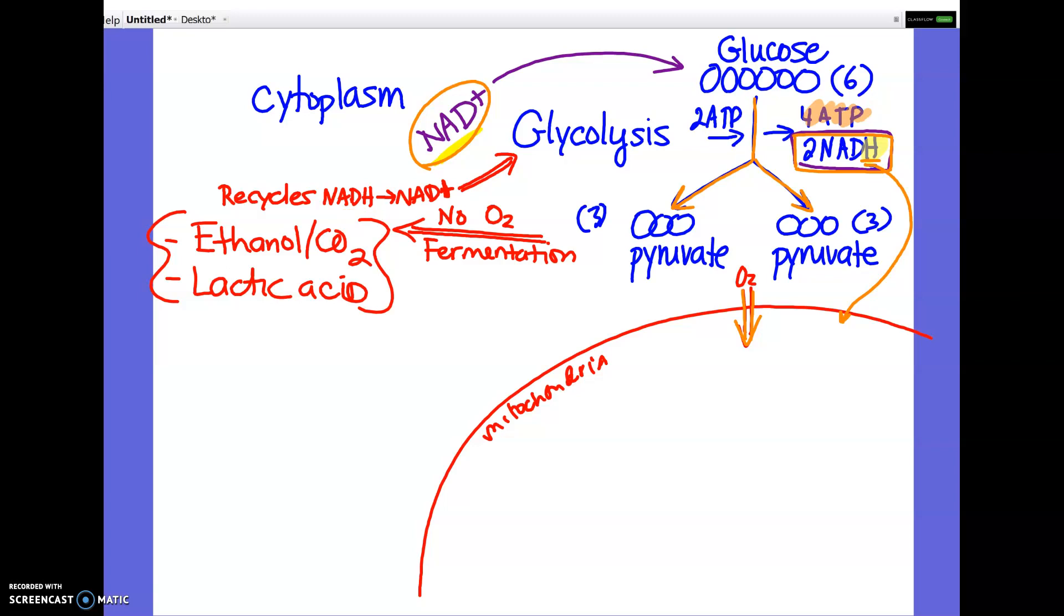I gave the analogy in class that if you came home and you had a whole bunch of groceries in your car, and you could only carry two bags at a time, you grab two bags, you're like NAD, and the bags are like the hydrogen. You carry those into your house. Until you can put those down somewhere, you can't go back to your car to get more bags. And the same is true here. So fermentation is a way of NADH getting rid of that hydrogen so it can go back to being NAD+ again, which is necessary for glycolysis, which means you could keep making a little bit of ATP.